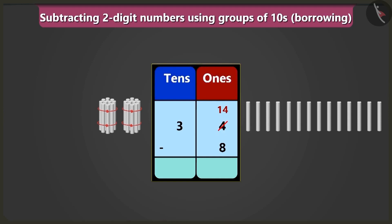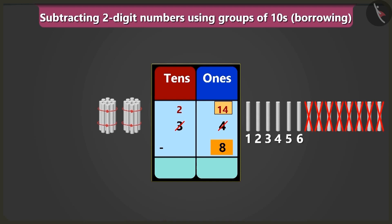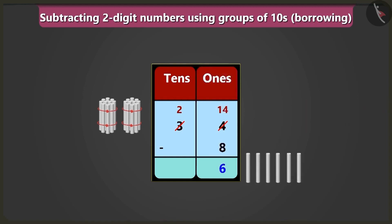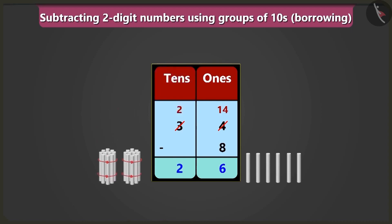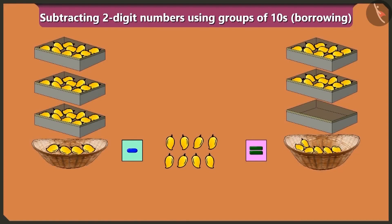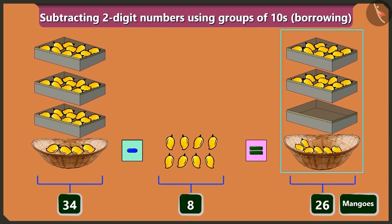Now subtracting 8 from 14: 1, 2, 3, 4, 5 and 6 — so we write 6 in the place of ones. We now have 2 tens in the place of tens, and since there are no tens to subtract, the answer is 26. So 34 minus 8 equals 26 mangoes.